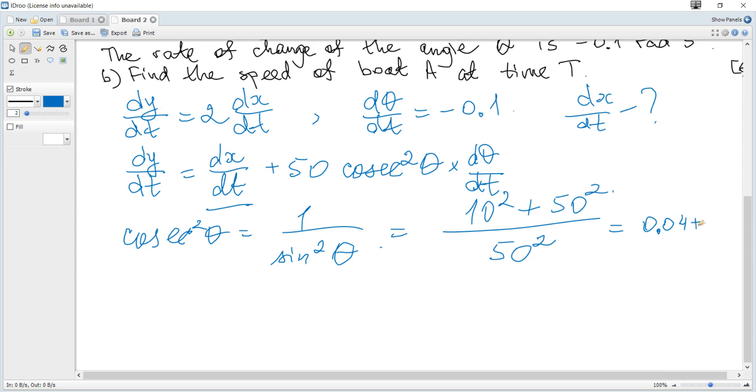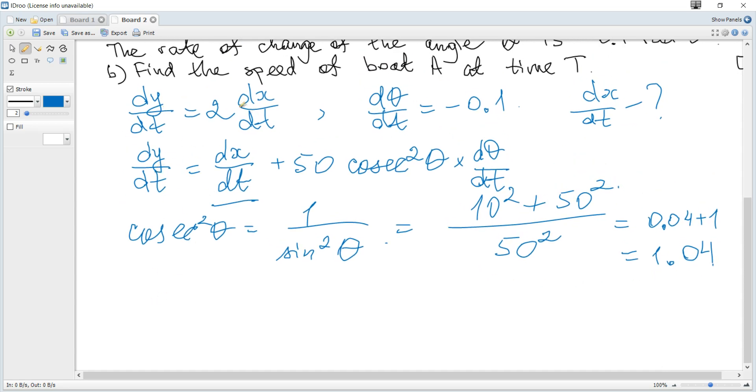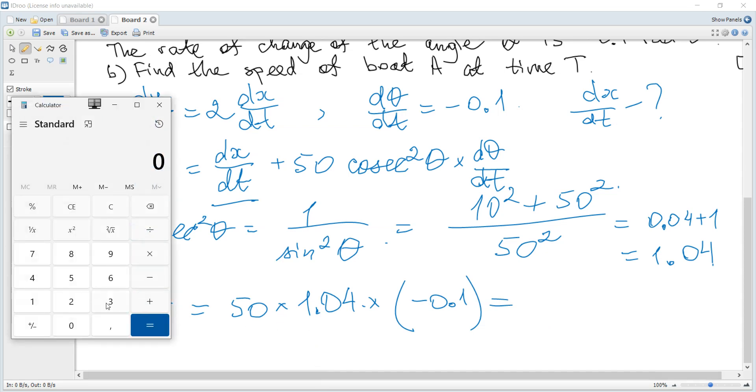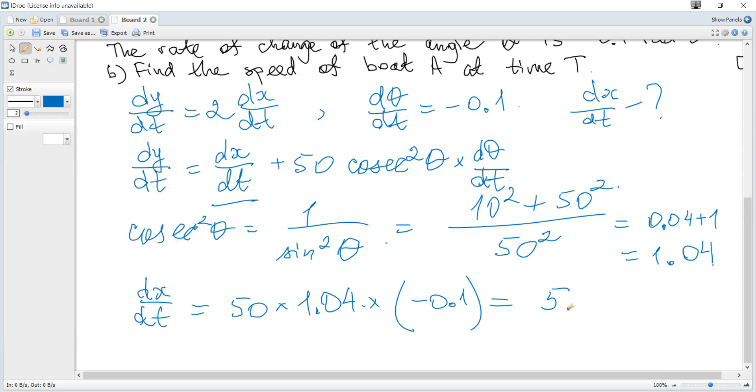Hence it becomes dy/dt is 2 dx/dt and move this dx/dt to the left. Hence it becomes dx/dt is 50 multiplied by 1.04 and multiplied by d theta over dt, which is negative 0.1. Since we need speed here we should just consider magnitude. It becomes 5.2 meters per second.